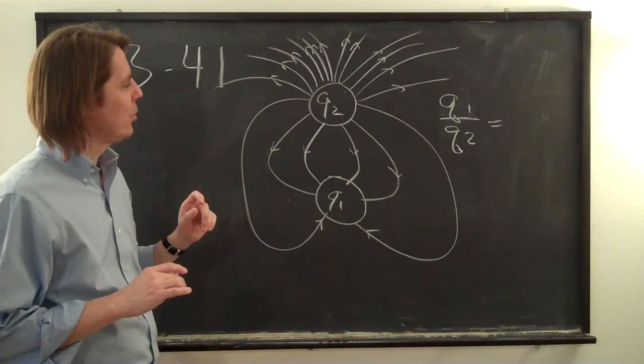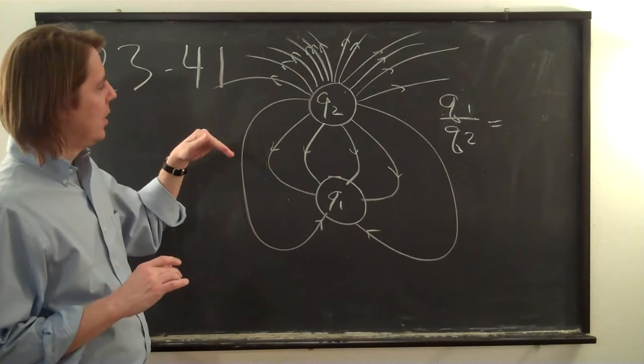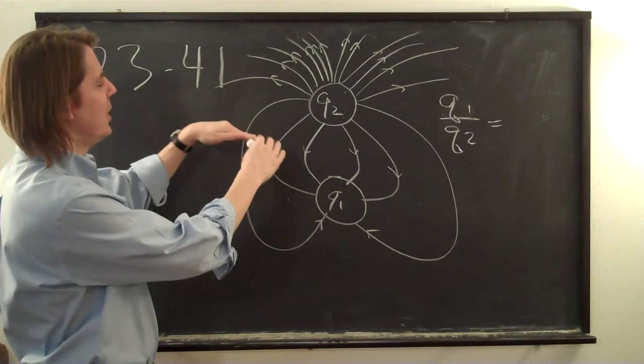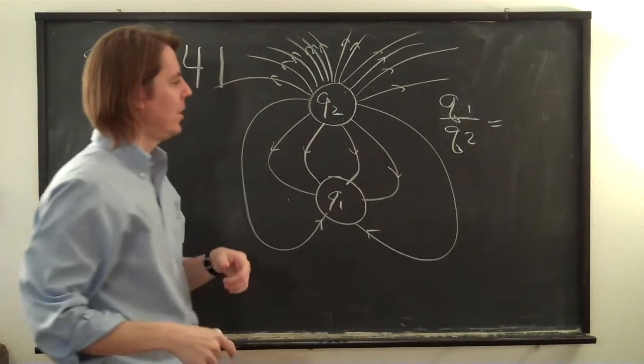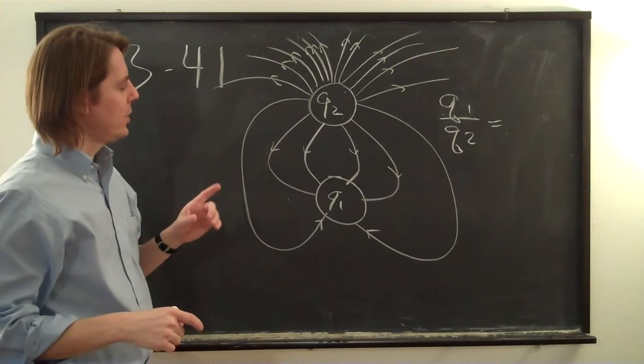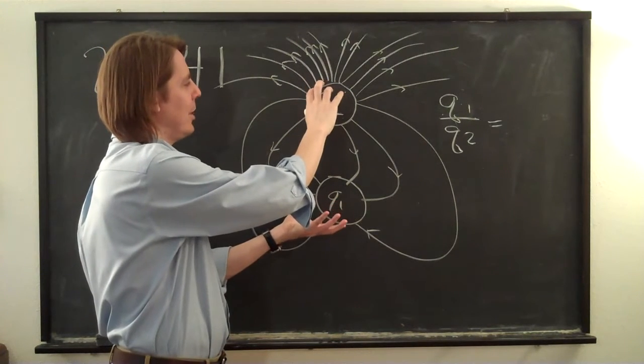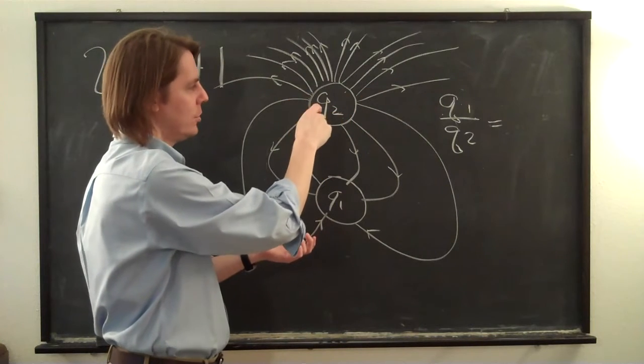So one thing you want to remember about field lines when we draw field lines, two things to remember. One is that the strength of the field is the number of lines per unit area. So if I put a perpendicular square in here, I could measure the field by counting field lines in different places. The other thing you remember is if two charges are sort of the same size, they have the same area on their surface and the number of field lines we draw is proportional to their charge.